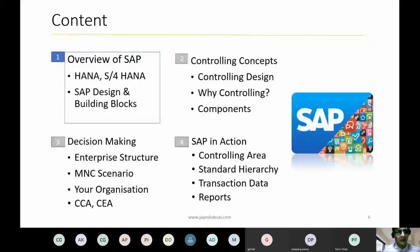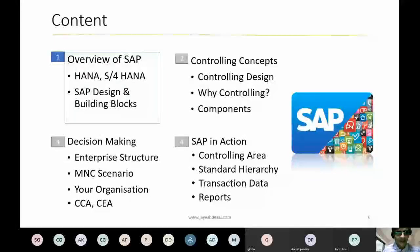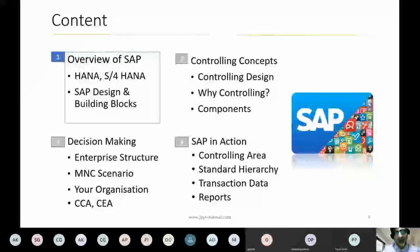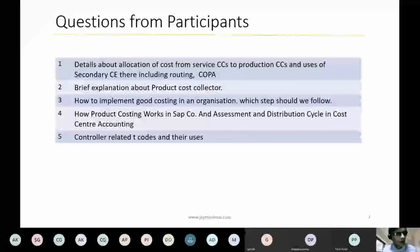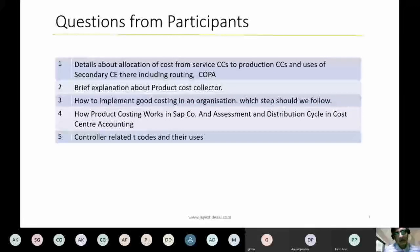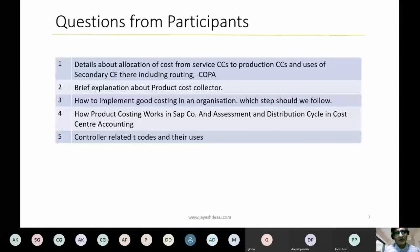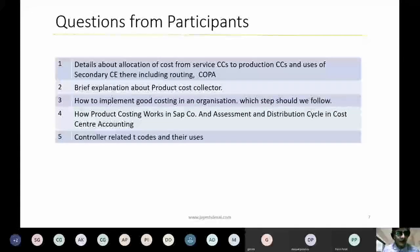Today I will first cover a brief about SAP S4HANA, just to help you understand the basic SAP design — because all that will be needed when we go towards the next topic. Then we'll talk about controlling concepts, decision making, and SAP in action. There are several questions from participants that I've included in my presentation, covering topics like allocation of cost from service cost centers to production cost centers, and use of secondary cost elements in routing. COPA I will not include today, as it would overload the session.